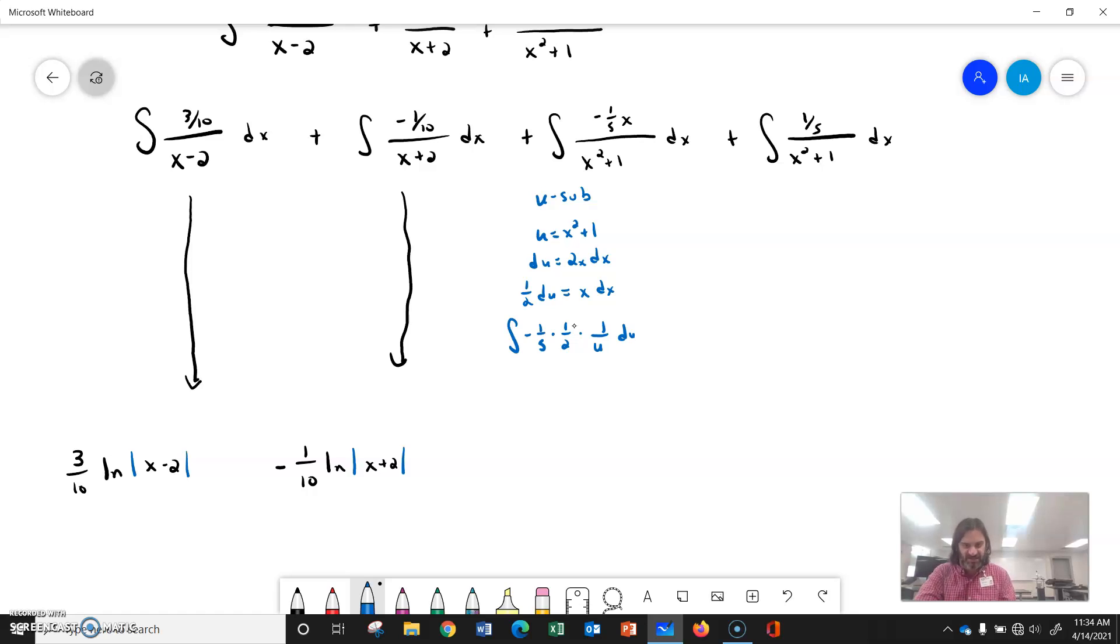So that gives me, when I integrate this, that gives me negative 1 tenths natural log of u, because I'm really just integrating the 1 over u. So what do I get out of that? When I go back to x, I get minus 1 tenths natural log of x squared plus 1.